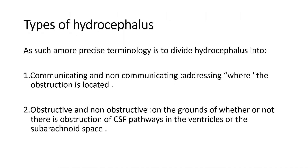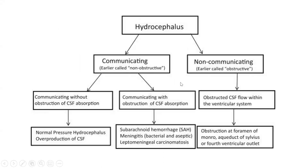Hydrocephalus is divided into communicating and non-communicating, addressing where the obstruction is located, and into obstructive and non-obstructive based on whether there is obstruction of CSF pathways in the ventricles or subarachnoid space. Non-communicating (formerly obstructive) has obstruction within the ventricular system at the foramen of Monroe, aqueduct of Sylvius, or fourth ventricular outlet. Communicating (formerly non-obstructive) is divided into: without obstruction of CSF absorption — as in normal pressure hydrocephalus or CSF overproduction — and with obstruction of CSF absorption, as in subarachnoid hemorrhage, meningitis, and leptomeningeal carcinomatosis.